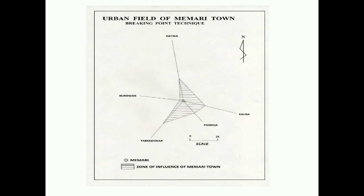The theoretical position of the margin of Memory town's urban field was calculated by a technique known as breaking point analysis. It is seen that the sphere of influence of Memory town is less towards Burdwan, because the sphere of influence of Burdwan town is very large towards Memory. However, towards Katwa, Kanla, Panduwa, and Tarukishya, the sphere of influence of Memory town is more or less the same.